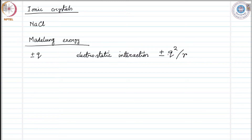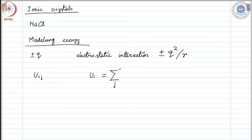Now let's consider u_ij as the interaction energy between the i-th and j-th ion, and we define u_i as the potential felt by the i-th atom due to every other atom in the crystal. That can be given as the sum prime over j of u_ij, where prime excludes i equals j.